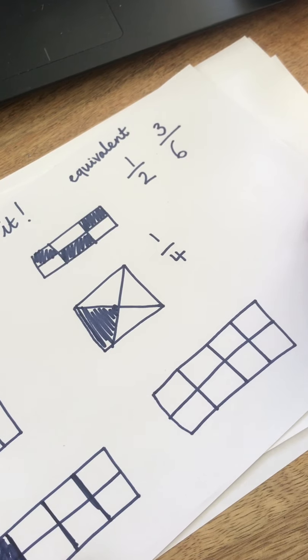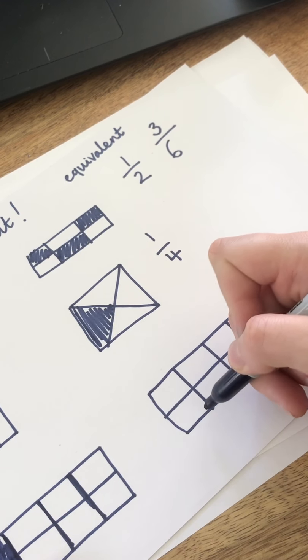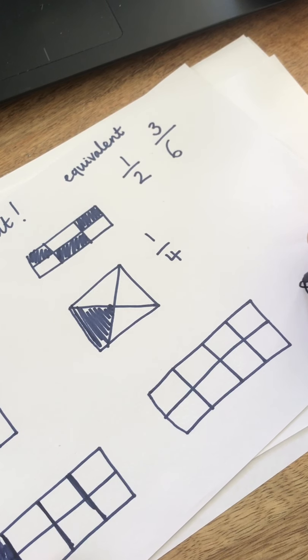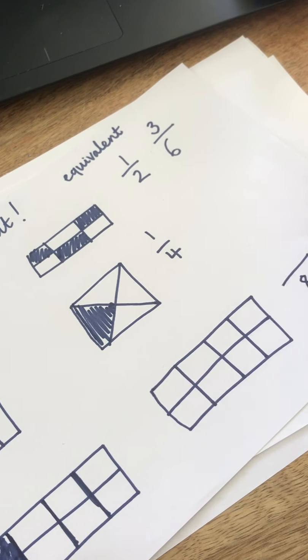You can count up how many squares there are all together. There's one, two, three, four, five, six, seven, eight. And you can find a quarter of eight.